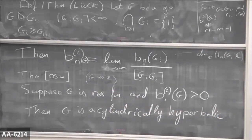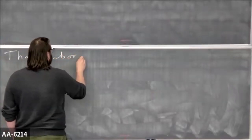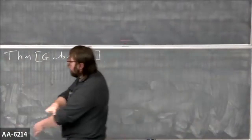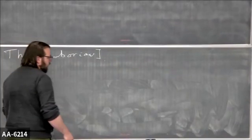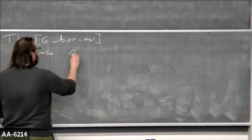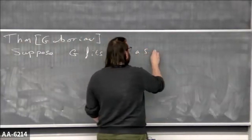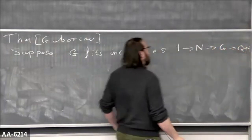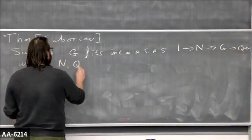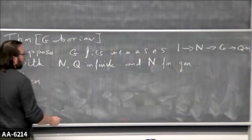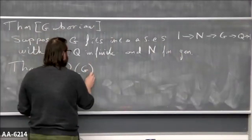I'm particularly interested in vanishing. One really lovely theorem — the theorem of Damian Gaboriau — relates to consequences of vanishing, but first: how do you know if it vanishes? There's actually a very easy way to see that it vanishes. Suppose G fits into a short exact sequence 1 → N → G → Q → 1 with N and Q infinite and N finitely generated. Then the first L² Betti number of G vanishes.